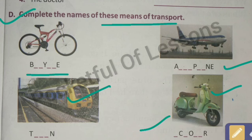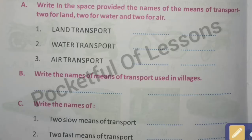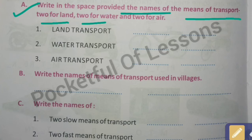Now we will see some extra worksheets for the lesson Means of Transport. Exercise A: write in the space provided the names of the means of transport - two for land, two for water, and two for air. You can see the space given and you have to write the names of the means of transport specifically two each.